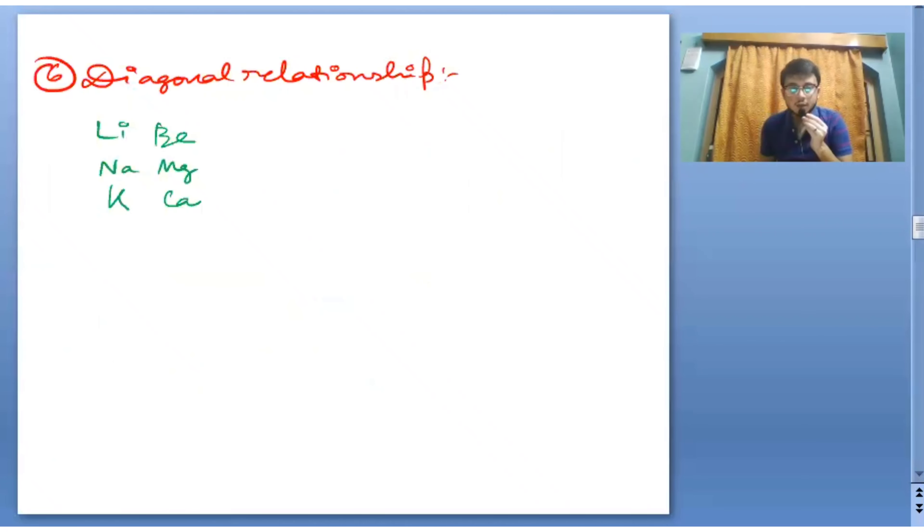Diagonal relationship. We have already seen it in our periodic table, but those who haven't seen it, the link is in the description. So metals who are in a diagonal position with one another in adjacent groups show similar chemical and physical properties. That is Li shows similar properties like Mg, Na shows similar properties like Ca.